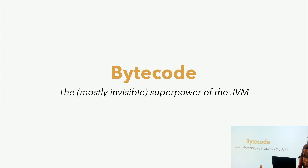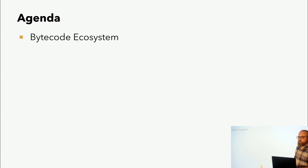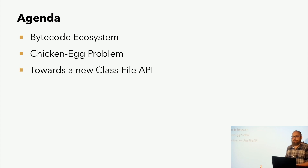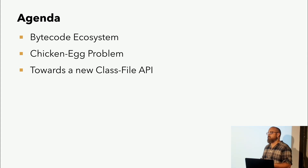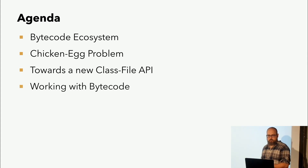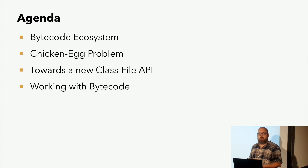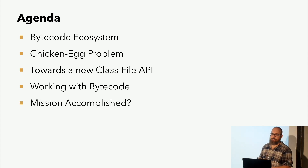Also jeder kennt es, aber sich wirklich damit intensiv beschäftigen oder auch selber Bytecode schreiben, das machen eigentlich die wenigsten, mich inklusive. Aber trotzdem ist es essentiell zu verstehen, was genau da passiert und wie man es eben auch beeinflussen kann. In meinem Vortrag heute würde ich gerne über das Ökosystem ein bisschen sprechen, wie ist der Status Quo, wofür wird Bytecode eingesetzt. Als nächstes das Henne-Ei-Problem, wie es zur neuen Classfile-API gekommen ist, wie sie designt ist und wie man von Classfiles die API kreiert hat. Dann schauen wir uns Code an, um besser die einzelnen Features zu verstehen. Und zum Schluss: haben wir das Ziel erreicht?